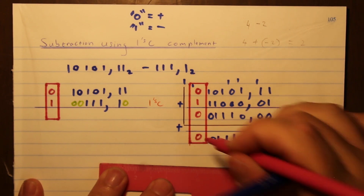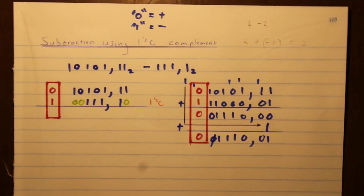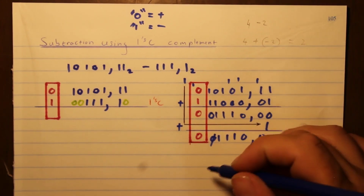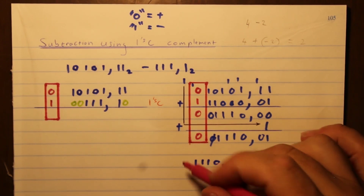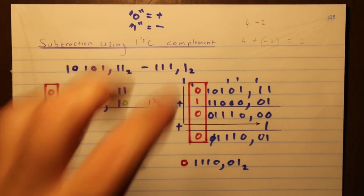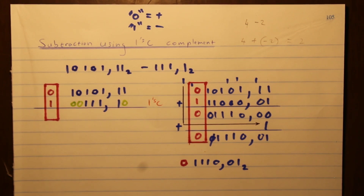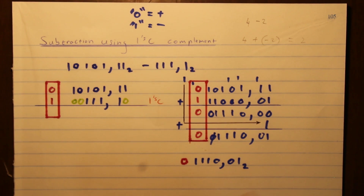The sign is still zero because it must be positive — and there is the answer. We can delete the leading zero because it's in front of the number, but you cannot delete the sign bit zero. So the answer is 1110.01 base two, with a sign of zero — meaning positive. That's the answer for one's complement subtraction using binary addition. In the next video we'll look at subtracting a larger number from a smaller one using one's complement, which will give us a negative answer.